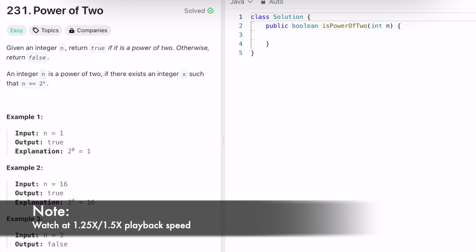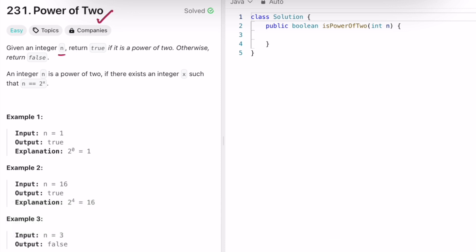Hey guys, welcome to a new video. In today's video we're going to look at a LeetCode problem and the problem's name is Power of Two. In this question we are given an integer n and we have to return true if it is a power of two, else we have to return false. So the return type is a boolean.